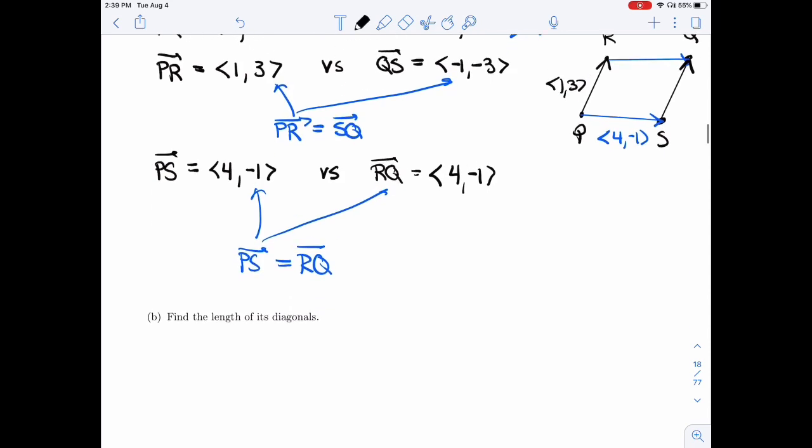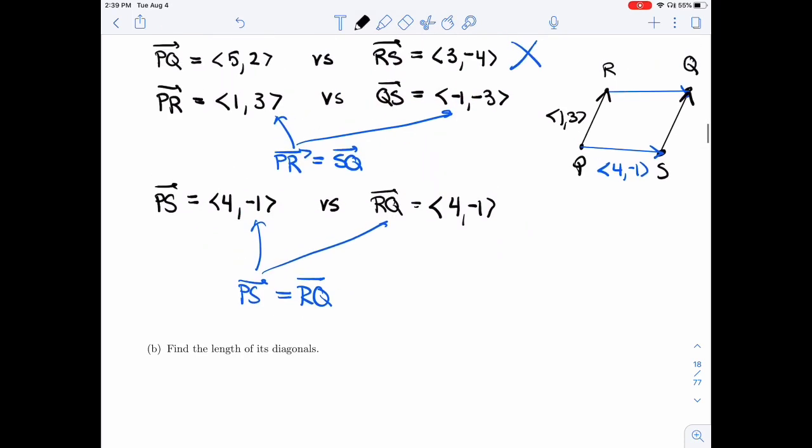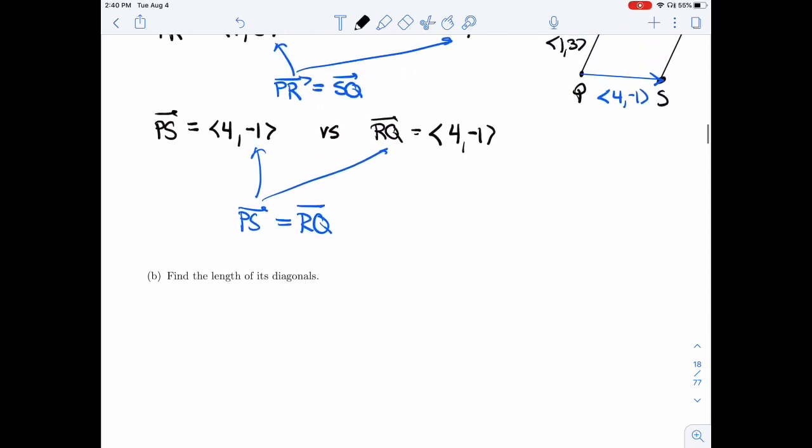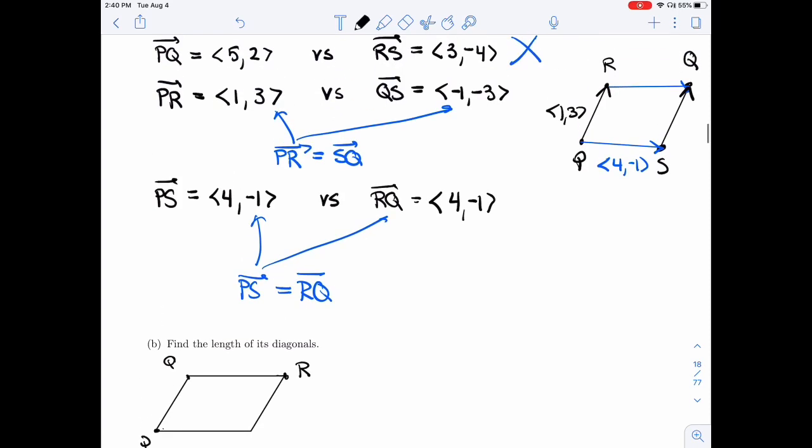Now I want to find the length of its diagonals. I could do this only from the vectors, but here I have a little advantage. I know what it looks like. So I know this is P, I know this is Q, I know this is R, P, R, Q, S.